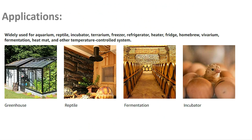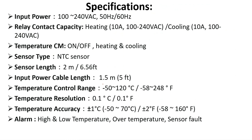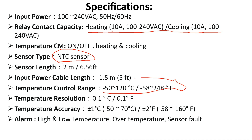This controller can be used for different applications like fermentation, incubator, and reptile enclosures where temperature needs to be controlled. The important specifications include relay contact capacity — the maximum load supported is 10 amps. The NTC sensor is used for measuring temperature; NTC stands for negative temperature coefficient, whose resistance decreases with increase of temperature. The temperature range and different alarms — high and low temperature, and sensor fault alarms — are also available.